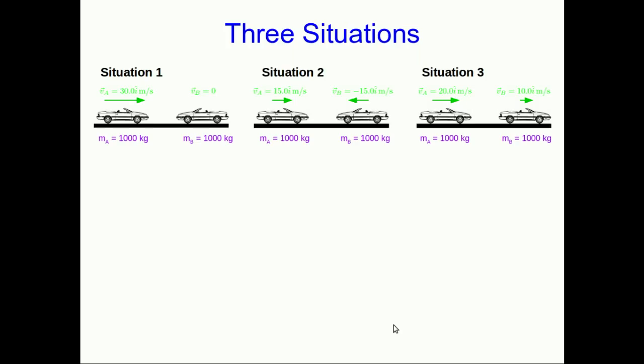Let's look at three very similar situations. Here we have identical cars about to crash into each other, and I've set it up so that there are three different situations with their velocities. In Situation 1, car B is stationary and car A is coming at it at 30 meters per second. In Situation 2, cars A and B are coming at each other, each going at 15 meters per second, although that means there's a relative speed between them of 30 meters per second.